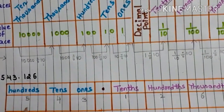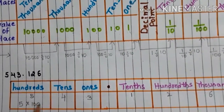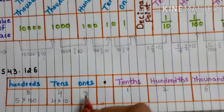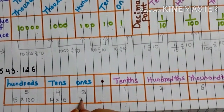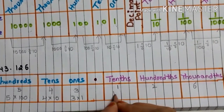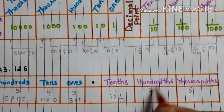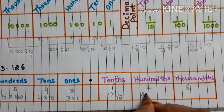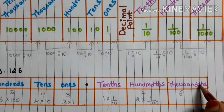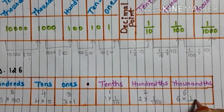Now we write the place values. 5 is in the 100's place, so the place value is 5 × 100. 4 is in the 10's place, so the place value is 4 × 10. 3 is in the 1's place, so the place value is 3 × 1. 1 is in the tenths place, so the place value is 1 × 1/10. 2 is in the hundredths place, so the place value is 2 × 1/100. 6 is in the thousandths place, so the place value is 6 × 1/1000.